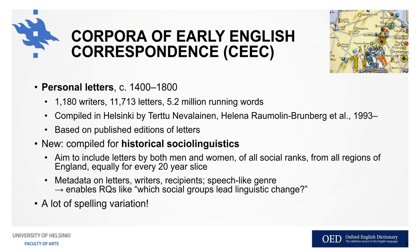The corpus was compiled for historical social linguistics — one of the first corpora compiled for this purpose — so that we could compare the language use of different social groups. We wanted to include letters by both men and women, of all social ranks and from all regions of England, basically equally for every 20-year period. Of course we don't have equal amounts from all social groups, as it's mostly highly educated men for whom published editions exist. But the aim was to have something from all groups for every 20-year slice. We also have metadata on the letters, writers and recipients, so we know their social background.